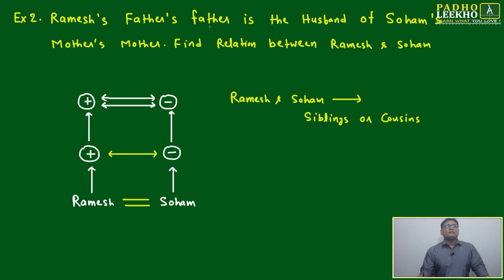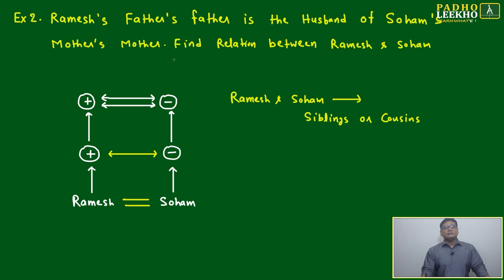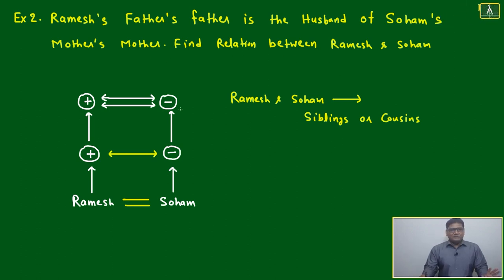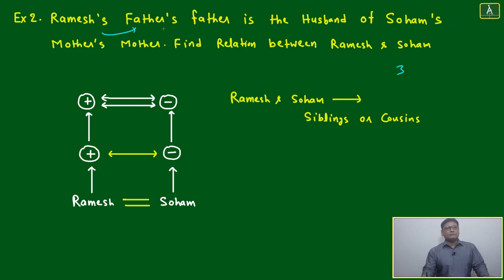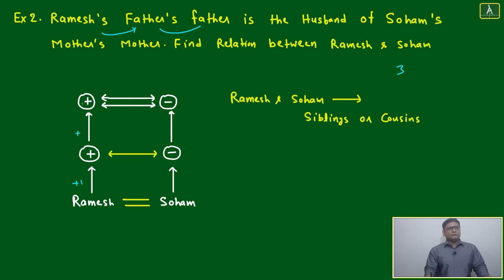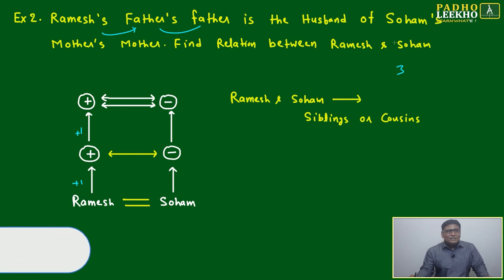Ramesh's father's father is the husband of Soham's mother's mother. Find the relation between Ramesh and Soham. One thing we understood: how many generations are involved? Three generations. Ramesh's father's father — that's Ramesh plus one generation to father, plus one generation to grandfather.